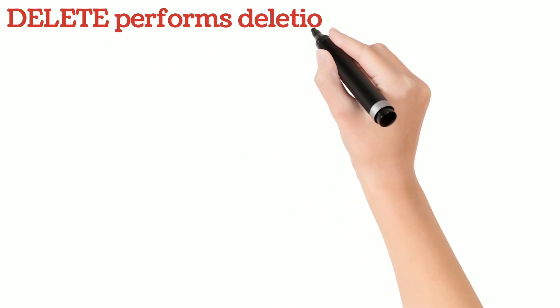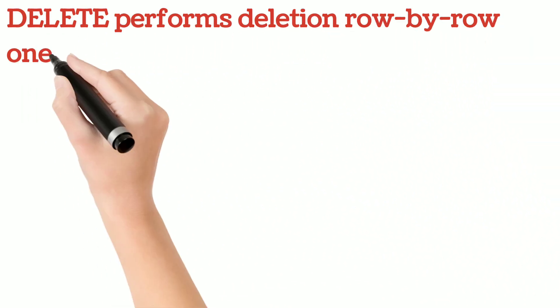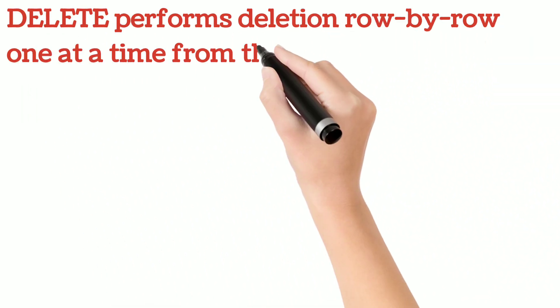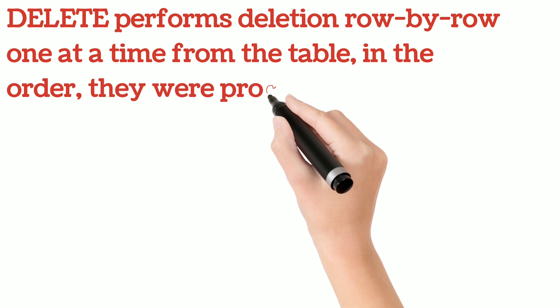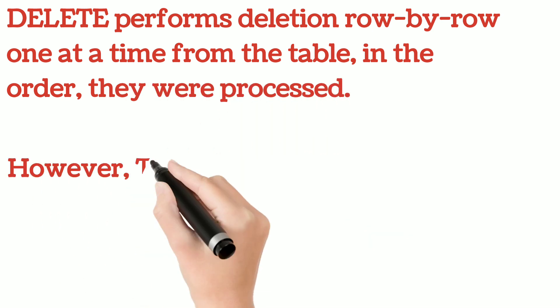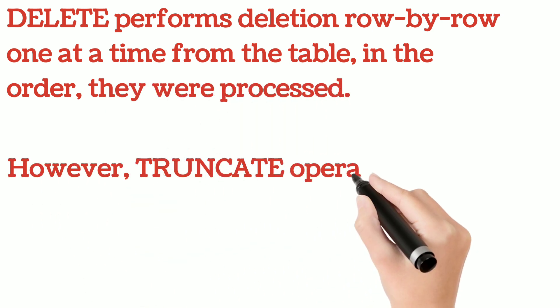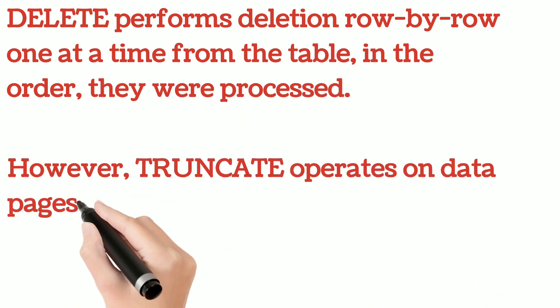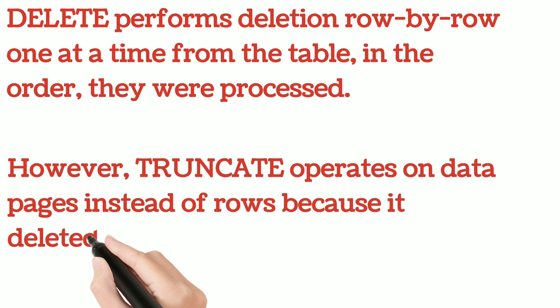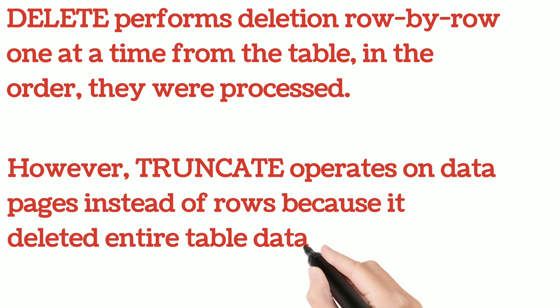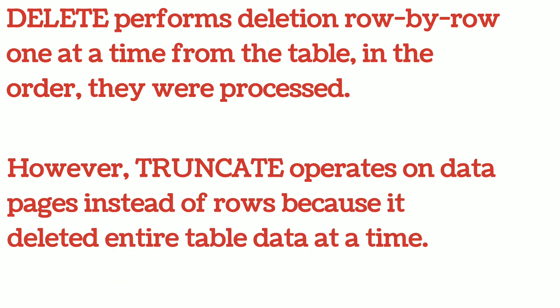DELETE performs deletion row by row, one at a time from the table, in the order they were processed. However, TRUNCATE operates on data pages instead of rows because it deletes the entire table data at a time.